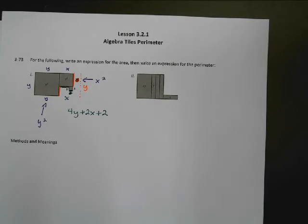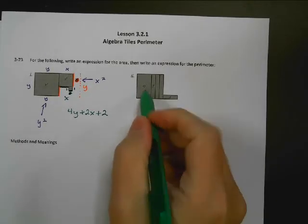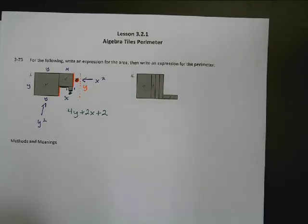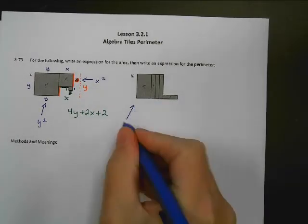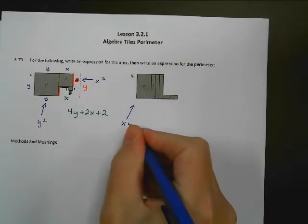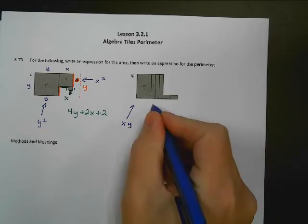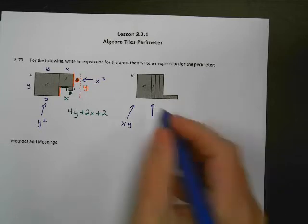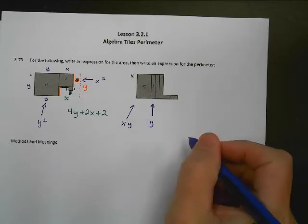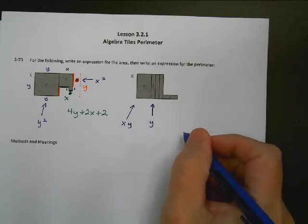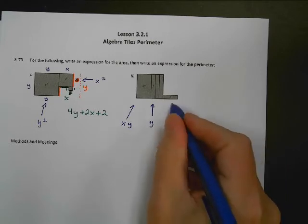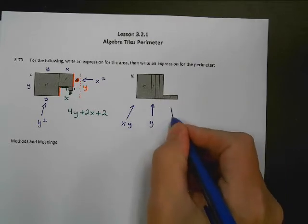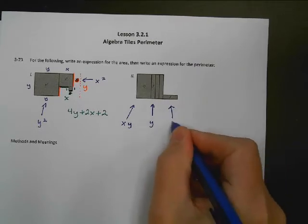All right, in our next shape, this part, don't know if you can see it or not, but that part says that that one is x times y. And this part here, these long ones here, say that those are all y's. So remember, these are the areas. And then this part here says that this area is x.